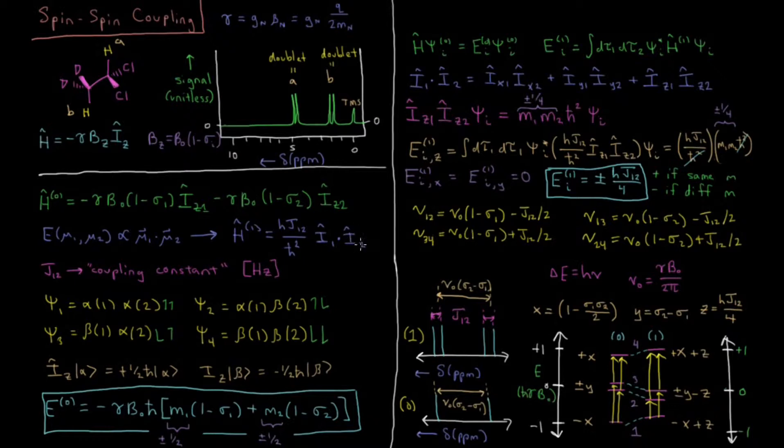And then the rest of this operator is the total spin angular momentum of nucleus one dotted with the spin angular momentum of nucleus two. Notice this is the total angular momentum here, and these were each the Z component, because these are interacting with the default magnetic field of the spectrometer, which we've aligned in the Z direction. And these are interacting with the magnetic field of each other, which could be in whatever direction we please, whatever direction the nuclei happen to have their magnetic moments pointed.